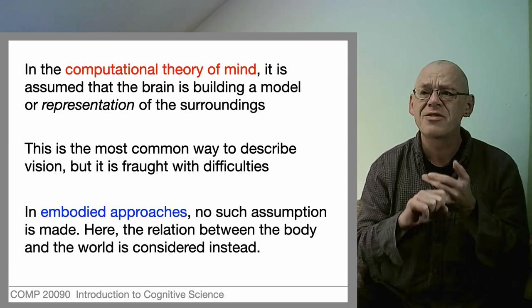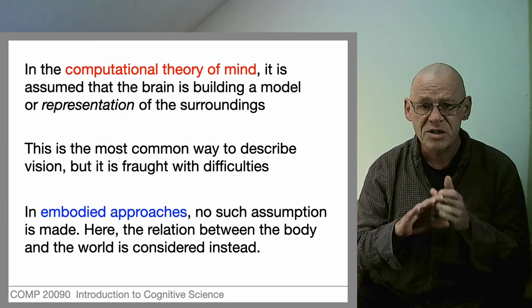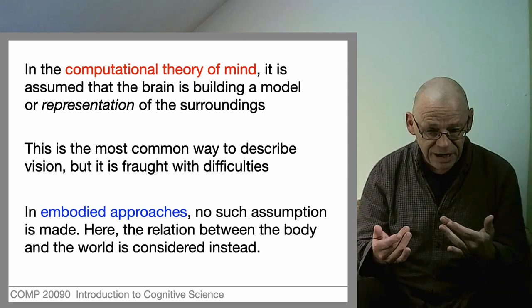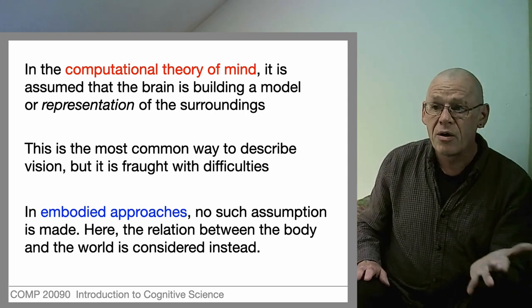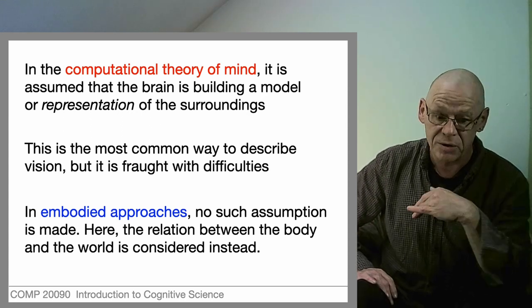It's by far the most common way that vision is described, but it has lots of logical problems. But it's one way of thinking about how that changing pattern on the retina leads to our ability to see, identify, recognize things, and move around in the world.